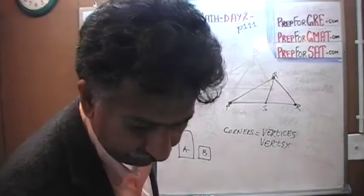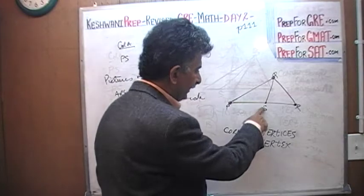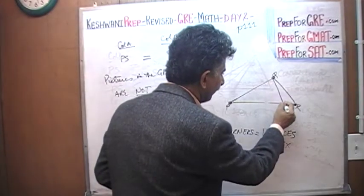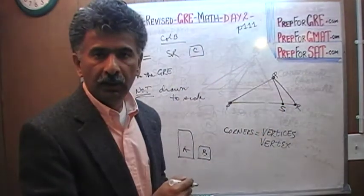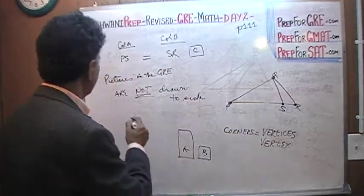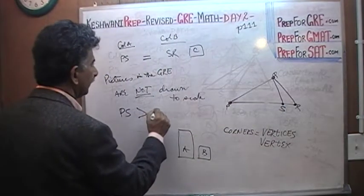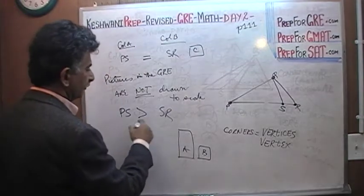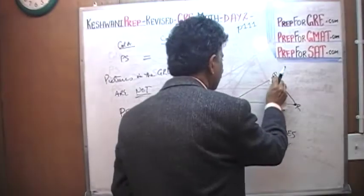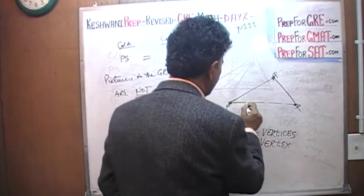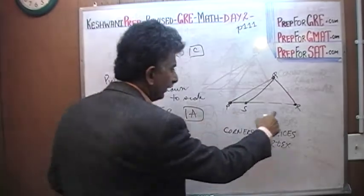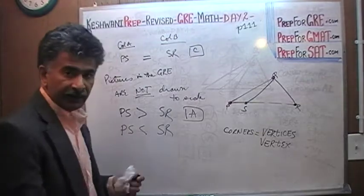The same exact thing is going on here. Even though S, the way it is drawn, happens to be right here in the middle, for all we know, S could be located towards the right side of the picture, in which case P to S would be more than S to R, and the answer would be A in this scenario. Or, for all we know, the point S could be over here, in which case P to S would be smaller than S to R, and in that scenario the answer would be B.